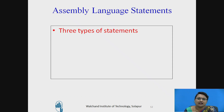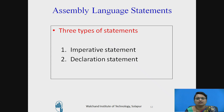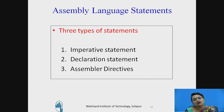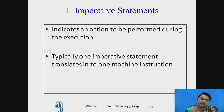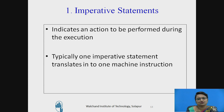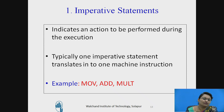Moving towards assembly language statements, there are three types: the first is imperative statements, the second is declaration statements, and the third is assembler directives. Imperative statements are the actual actions performed during execution — typically each imperative statement translates into one machine instruction. Examples include MOVE, which moves contents between register and memory, ADD for addition, and MUL for multiplication.